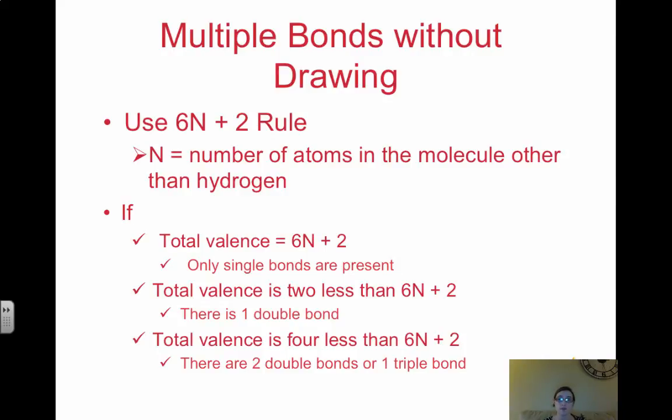If you want to determine if you're going to have multiple bonds before you even draw the Lewis structure, you can use what's called the 6N plus 2 rule. N is the number of atoms other than hydrogen. So N represents your number of heavy atoms. Anything except for hydrogen. So let's say for PCl3, N would be 4. 4 atoms, not hydrogen. So that would be 6 times 4 is 24 plus 2. That's 26. So if your total number of valence electrons equals 6N plus 2, you have only single bonds. If your total valence is 2 less than 6N plus 2, you're going to have a double bond. If your total valence is 4 less than 6N plus 2, you have two double bonds or one triple.